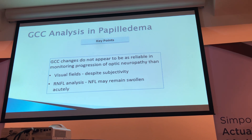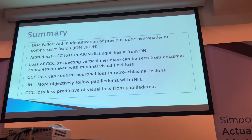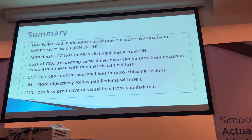In summary, the RNFL can confirm the presence of disc pallor and identification of previous optic neuropathy. Altitudinal ganglion cell complex loss helps distinguish NAION from optic neuritis. Loss of the GCC respecting the vertical meridian can be seen in chiasmal compression even with minimal visual field loss, and the GCC can confirm loss in retrochiasmal regions. For IIH, it's more objective to follow papilledema with the RNFL, though ganglion cell loss is less predictive of visual field loss in papilledema. Both together can help follow these patients with IIH.